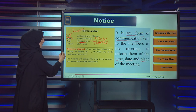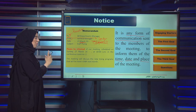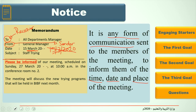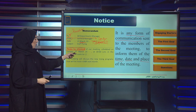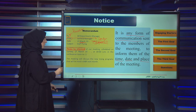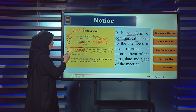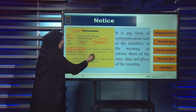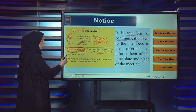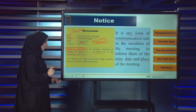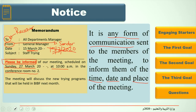Moving on to the body: it must begin with 'Please be informed,' followed by the other criteria — the time, date, and place. For example: 'Please be informed of our meeting scheduled on Sunday, 27 March at 10 a.m. in conference room number two.' The meeting will discuss the new training programs that will be held in BIPF next month. This is a sample of a notice.